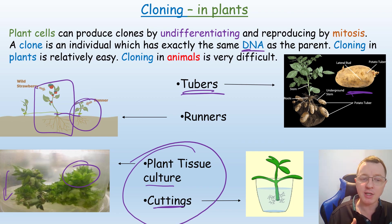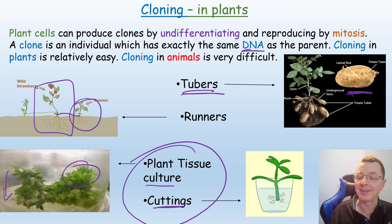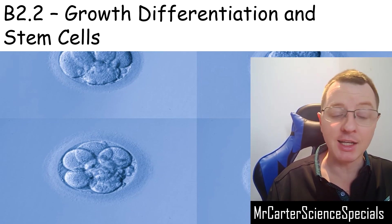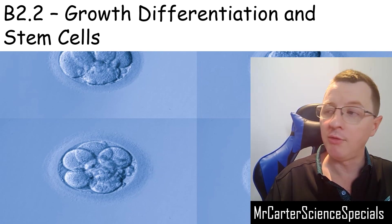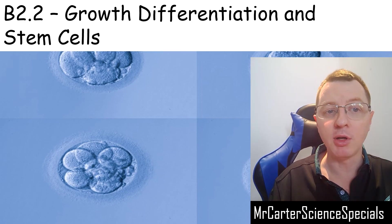It's very interesting to see that the processes of differentiation can be utilised to form specialised cells from unspecialised stem cells — both adult stem cells and embryonic stem cells. I hope you've enjoyed this video on growth, differentiation and stem cells. Please like and subscribe to the channel so you get notifications when I produce more videos to help with your GCSE biology studies. Thank you very much for your time — don't forget to comment below and let me know what you've learned.